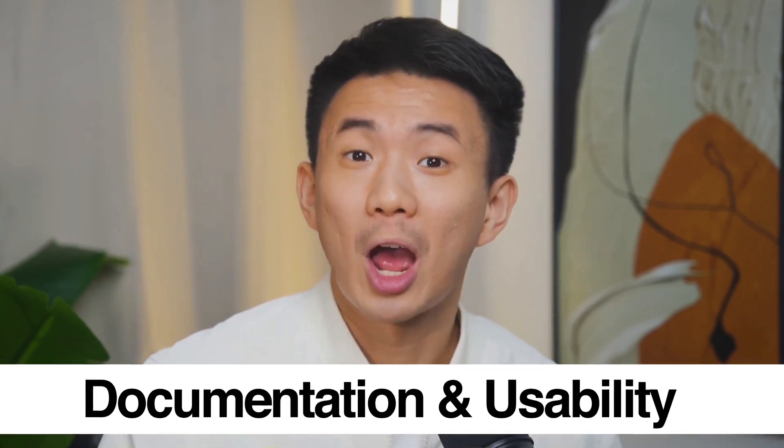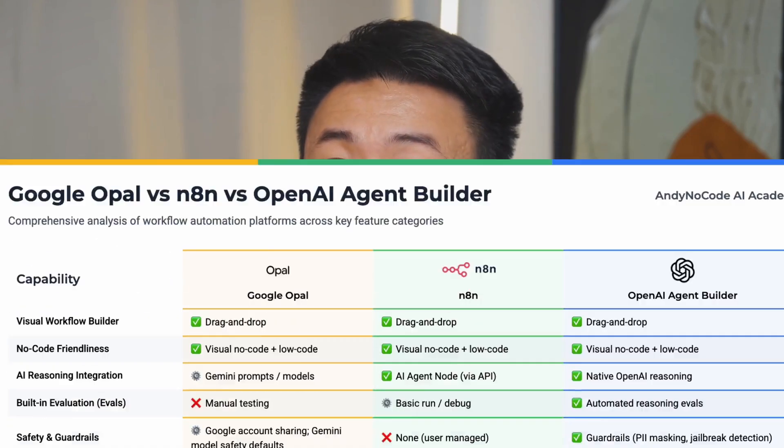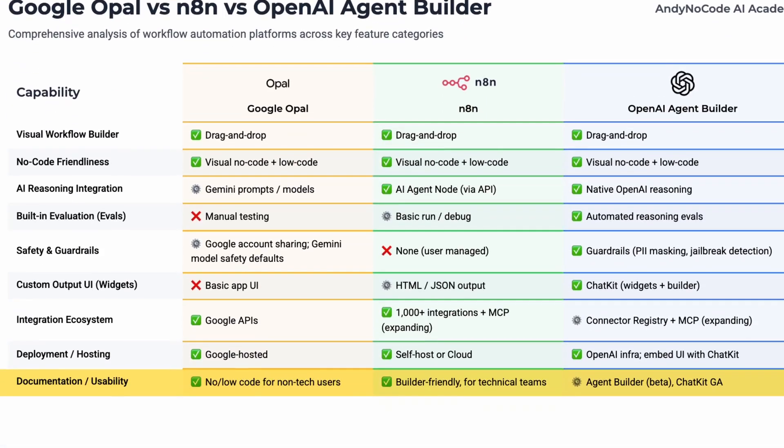Next, documentation and usability. Google OPPO is built for non-technical creators. NN is builder-friendly, but best for technical teams. As for OpenAI's Agent Builder, it's in beta and evolving fast, so ChatKit is already generally available.